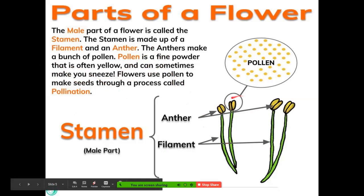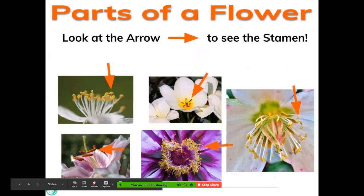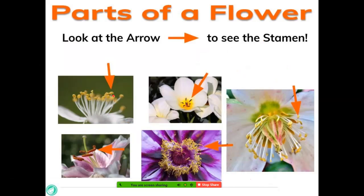Again, we have the anther, which has the pollen on it, and the filament, which is kind of like the little green stem that is attached to it. As you can see here, we can see various parts of the stamen on various flowers.